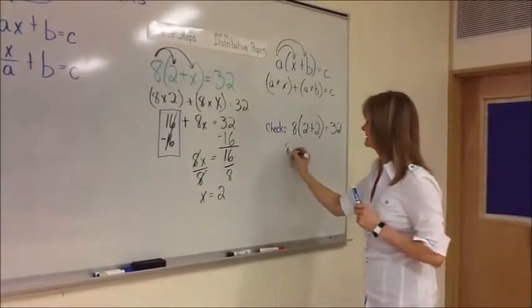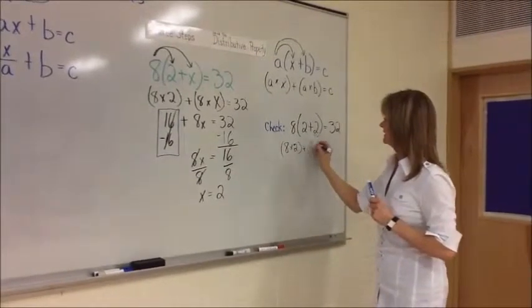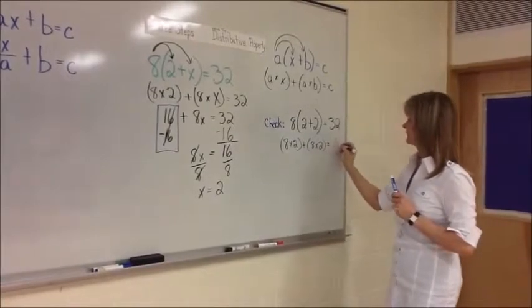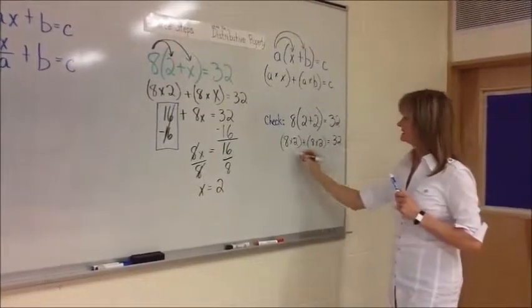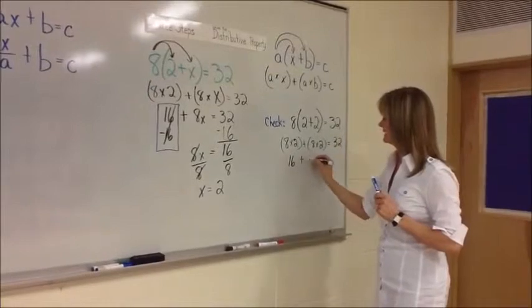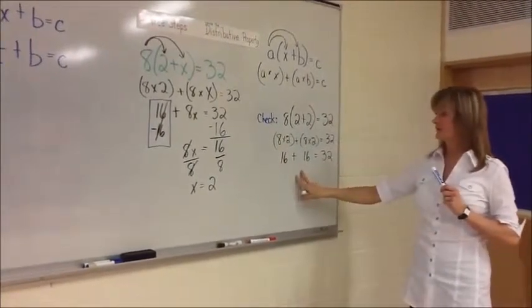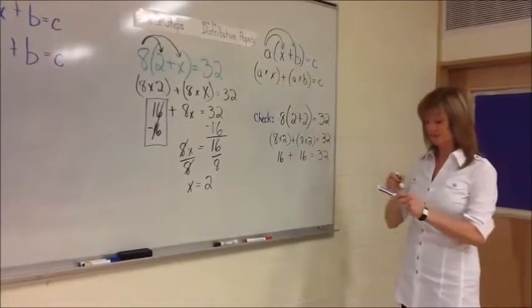So this really means that you are eight times two and eight times two. So we will do this. And eight times two is 16 plus 16 equals 32. Now, order of operations was in the brackets, you can do first.